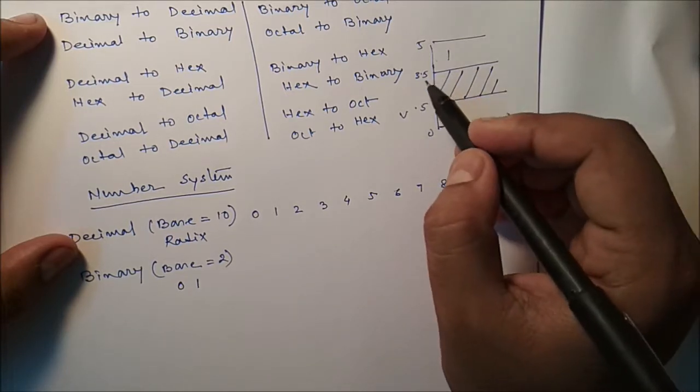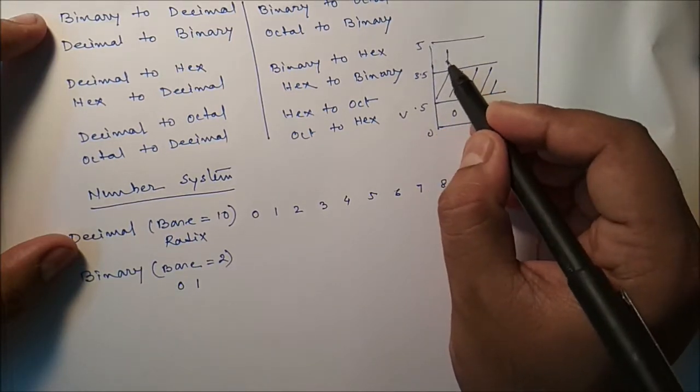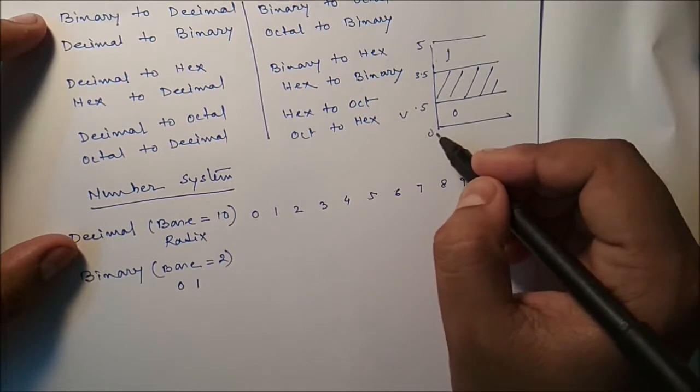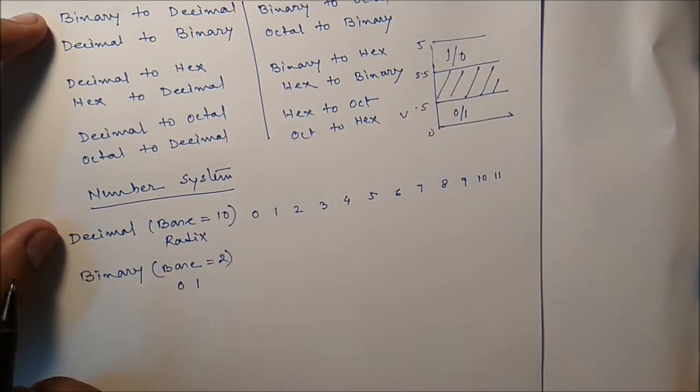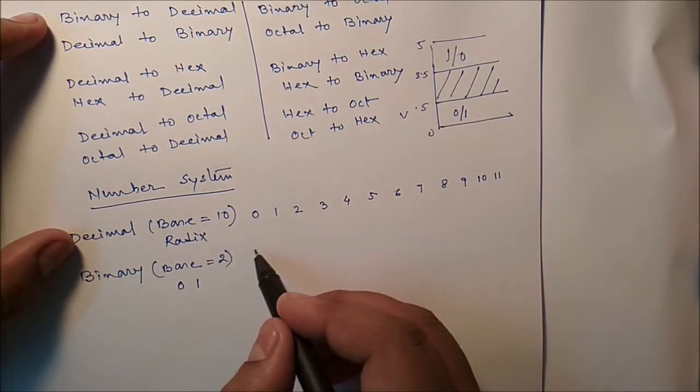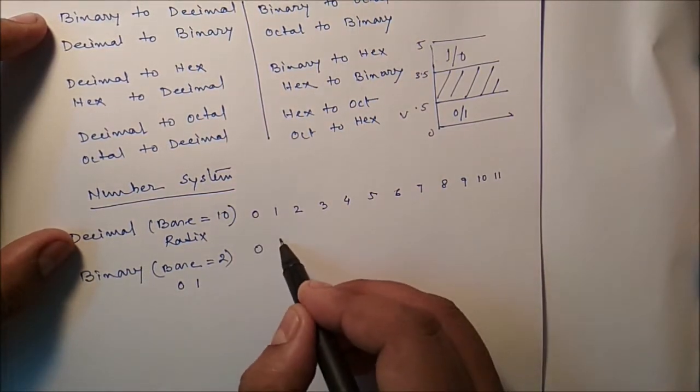So if a voltage is in between 0 to 0.5, it is as of 0. If it is 3.5 to 5, it is 1, or vice versa. We may choose 0 to 0.5 for 1, and 3.5 to 5 for 0. So for 0, it is 0. Then 1, it is 1.